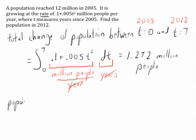So now, if I want the population in 2012, that's going to be the starting population, 12 plus 1.272.